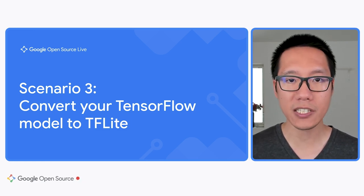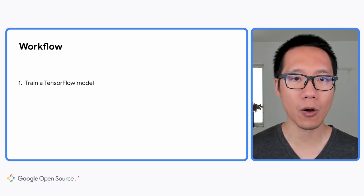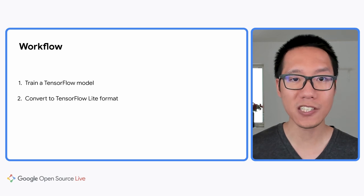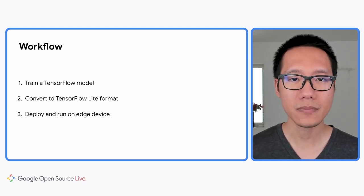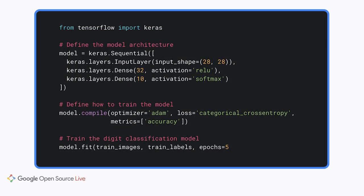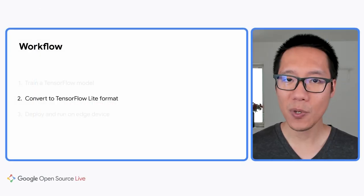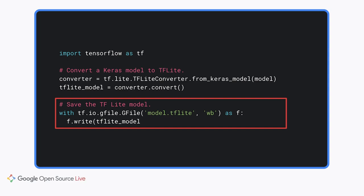There are three steps to convert and deploy a TensorFlow model. First, you build and train your model using TensorFlow — using the Keras API, just the same as how you have been using TensorFlow. Then you convert the model to the TensorFlow Lite format using the TFLiteConverter class to convert your Keras model, and save the model as a file so that you can deploy it on edge devices. To optimize your model for deployment on edge devices, you can apply quantization when converting the model.